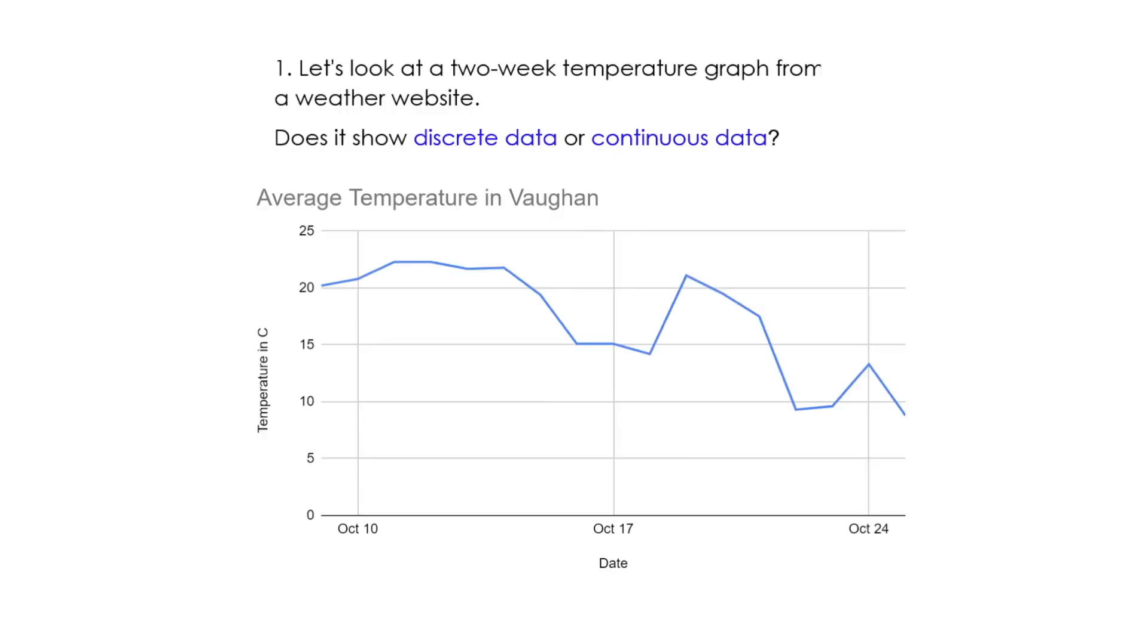Our final slide looks at a weather graph and it asks us, does it show discrete data or continuous data? And because it is a temperature graph, it's going to show continuous data because it is measured. So that's our video on broken line graphs and continuous and discrete data.